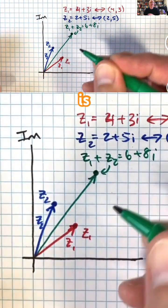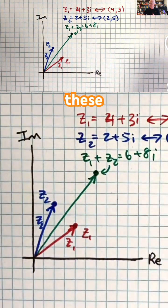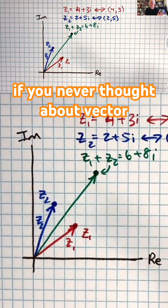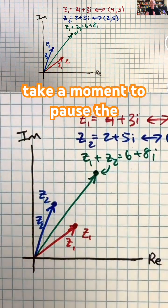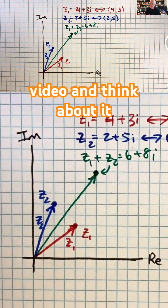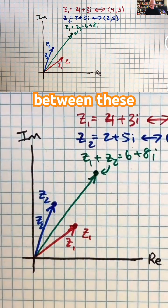Now, is there a relationship between these arrows? Why don't you go ahead and, if you've never thought about vector addition before, take a moment to pause the video and think about it. Do you see a relationship between these arrows?